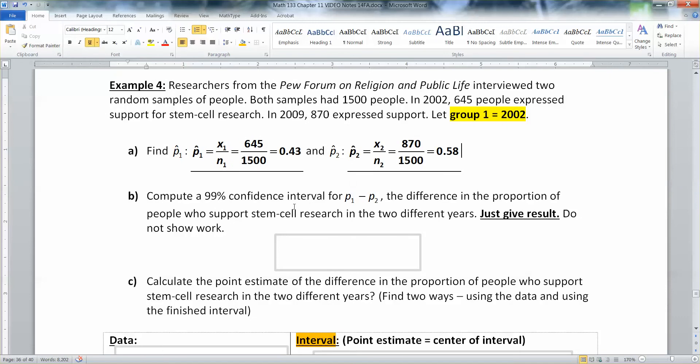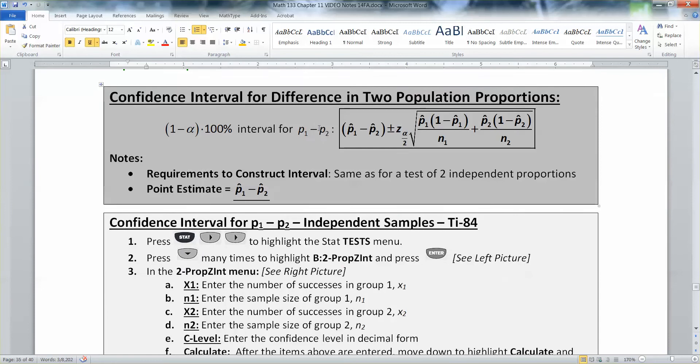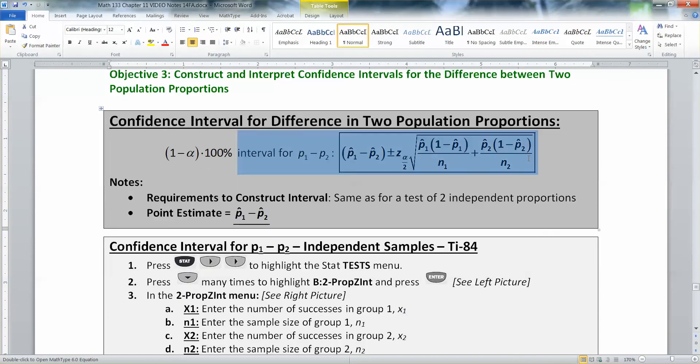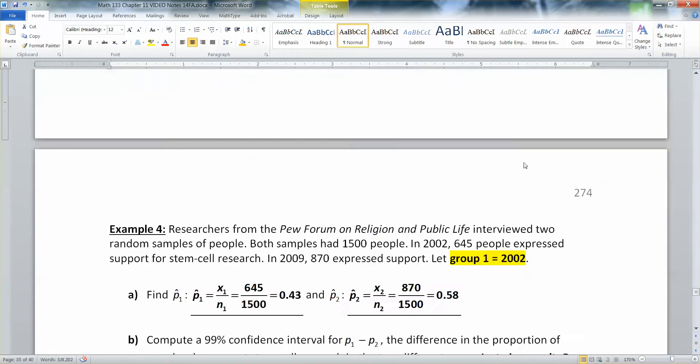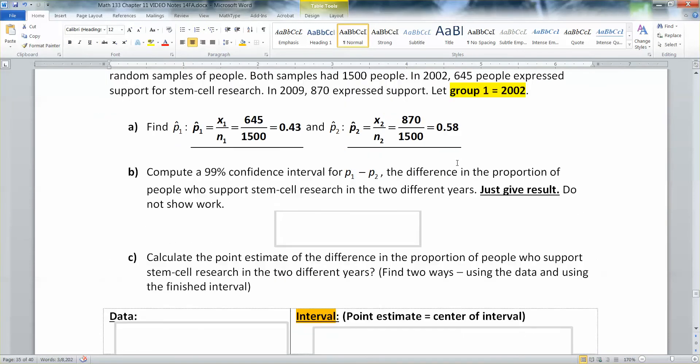Now we're going to construct a 99% confidence interval for the difference p1 minus p2, the difference in the proportion of people who support stem cell research in the two different years. This is a population proportion difference we're talking about. We can construct an interval. And here I said just give the result. Don't show the work. That's me getting you out of having to write this big, huge formula. So I'm not making you write the big formula. All you have to do is give me the result.